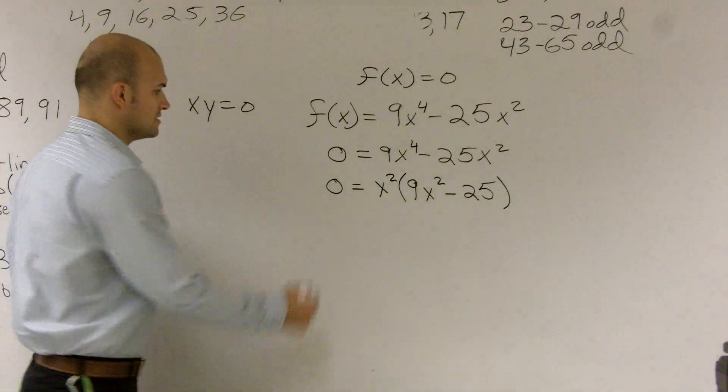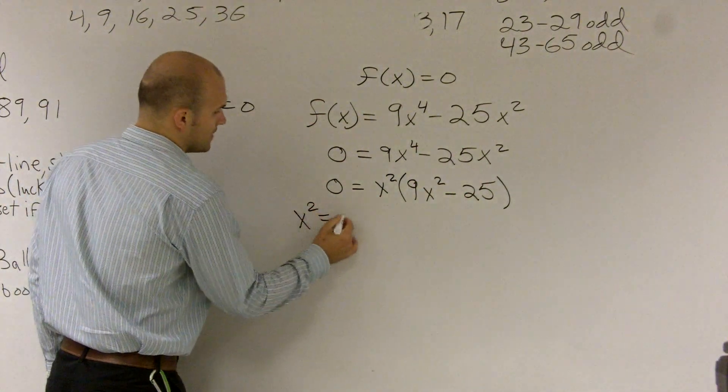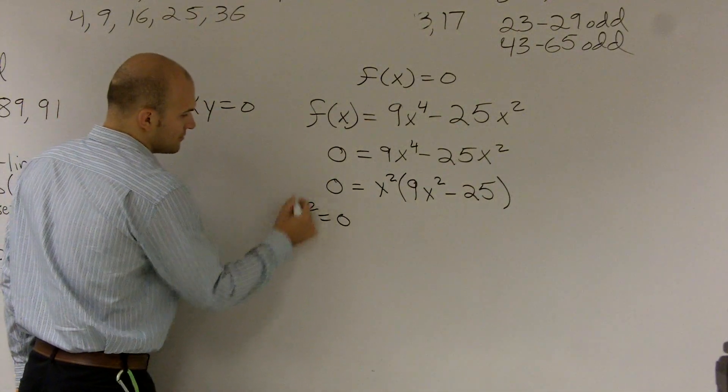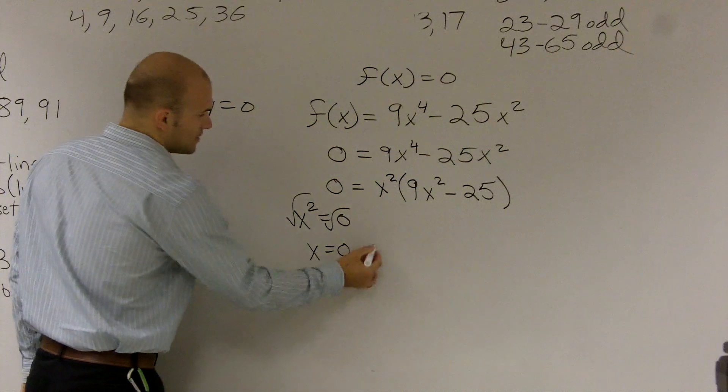So we can say x squared equals zero. Well, obviously x squared equals zero. Take the square root. x is equal to zero.